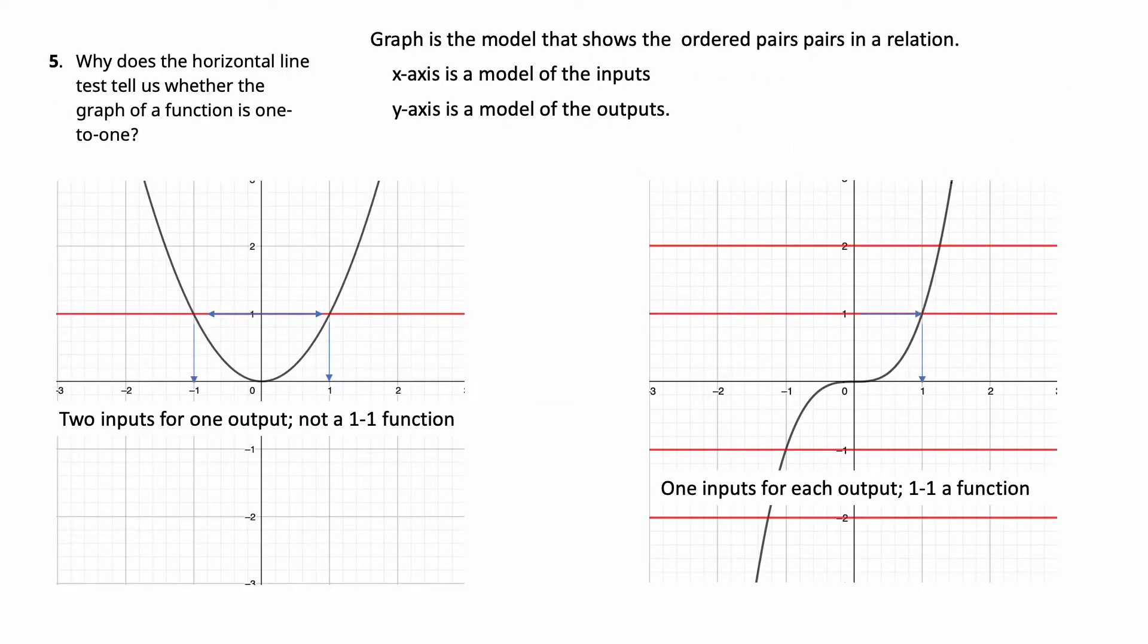Why does the horizontal line test tell us whether the graph of a function is one-to-one? Well again, one-to-one means that outputs are all different for each input. So when we look at a graph, what a graph is, is it models the ordered pairs in a relationship.